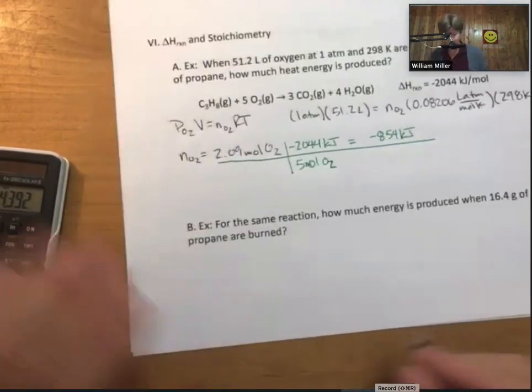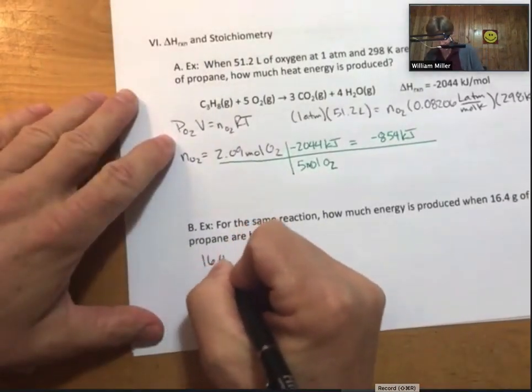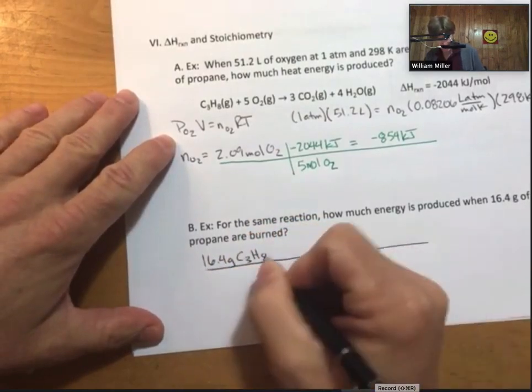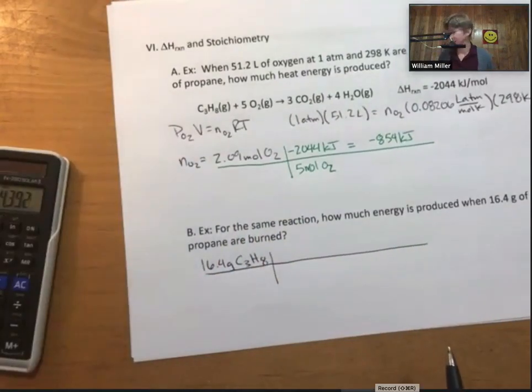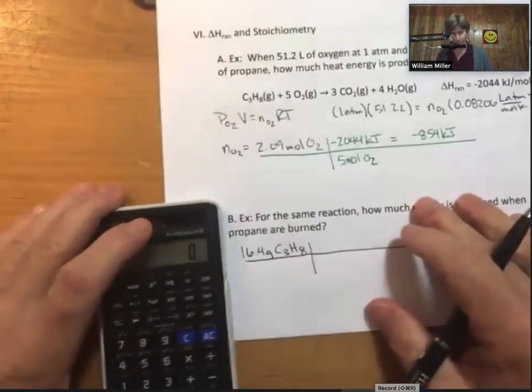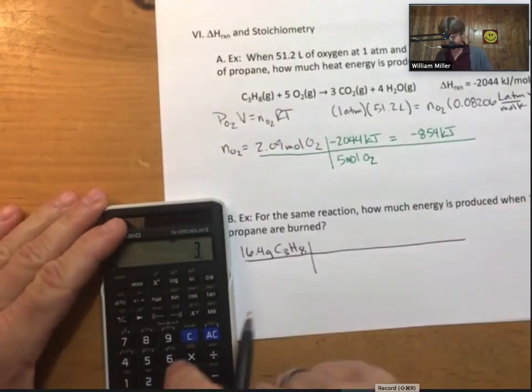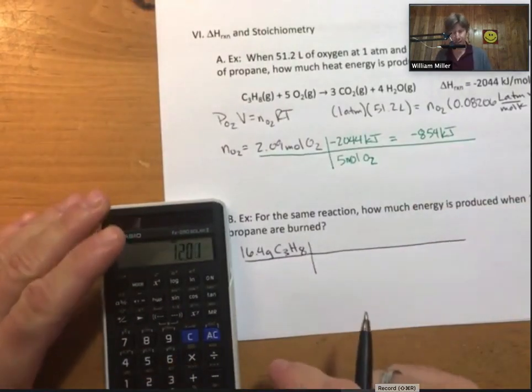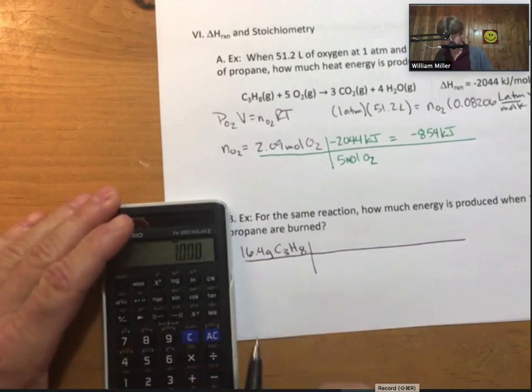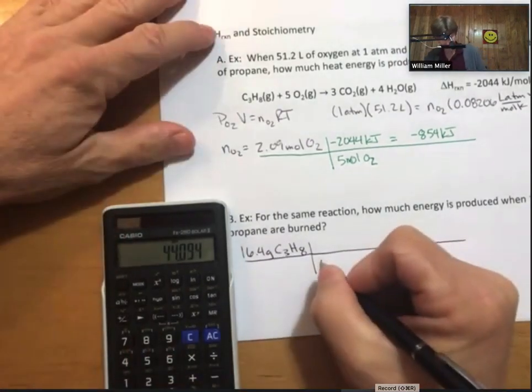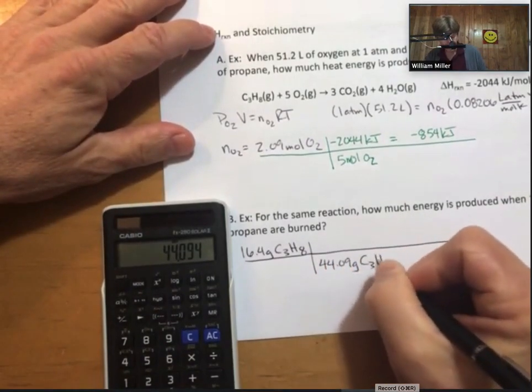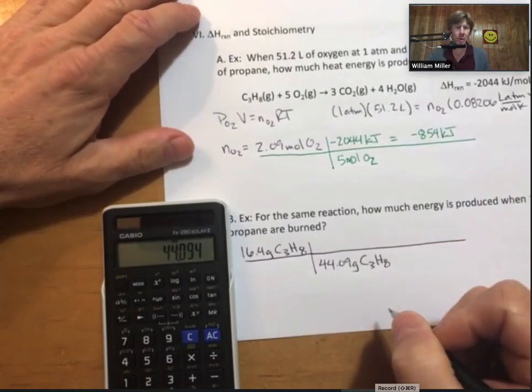For this one, we'll start with grams of propane. This one, I think, we'll need a longer picket fence for. So, propane, it's molar mass. So, 3 times the molar mass of carbon plus 8. We get 44.09 grams of propane per one mole.